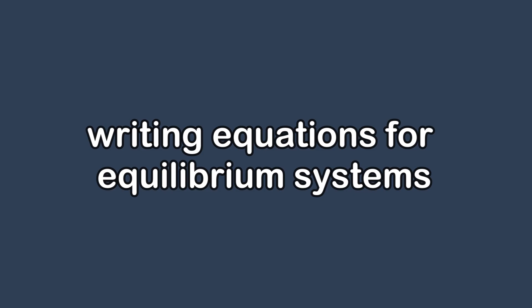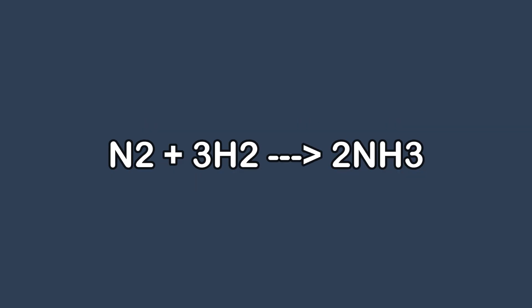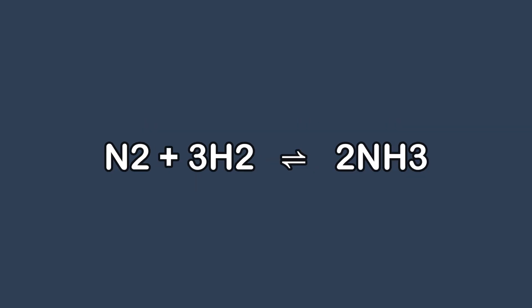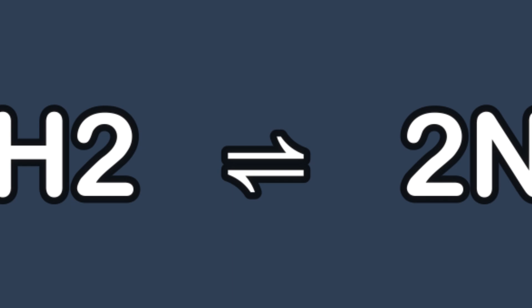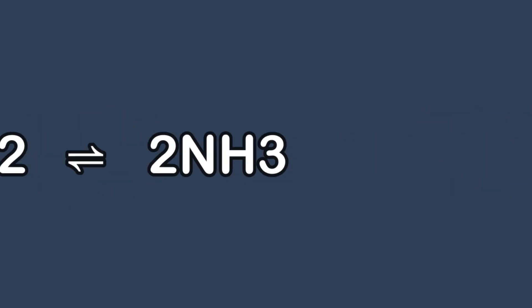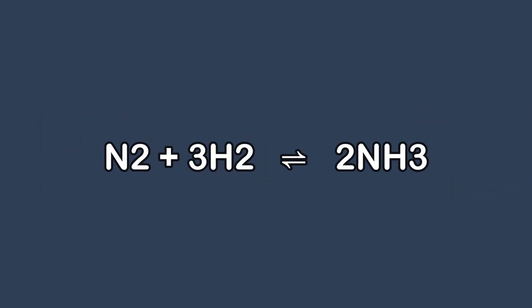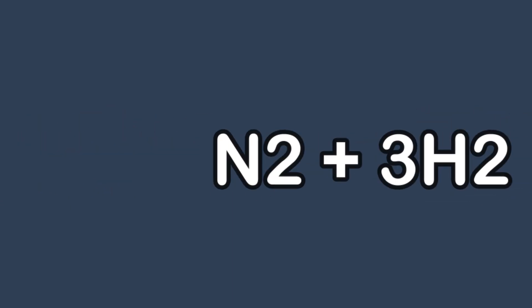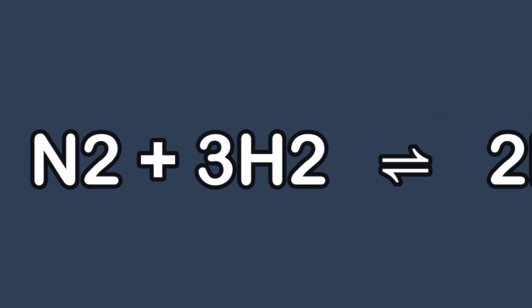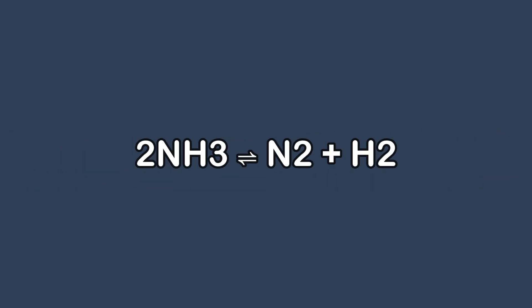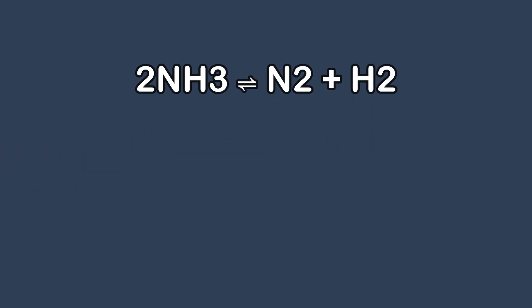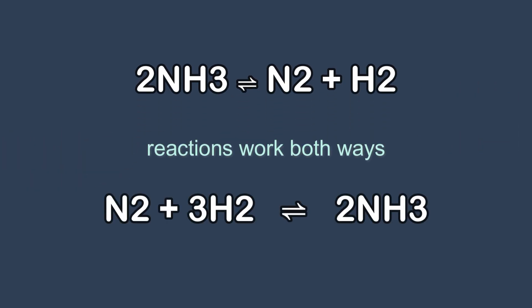Next, we need to be able to find and write chemical equations for equilibrium systems. For reactions that have reached equilibrium, you can use this symbol, which indicates that both forward and reverse reactions are happening. In this equation, the nitrogen gas reacts with the hydrogen gas to form ammonia, which can decompose back into the hydrogen and nitrogen gases.